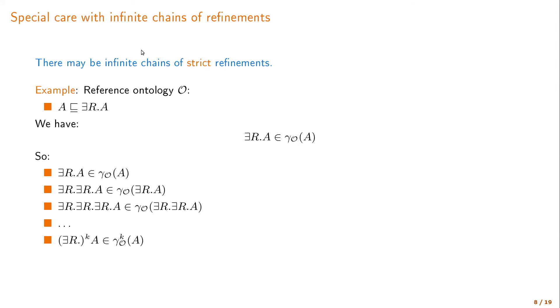And there is a possible concern here because there can be infinite chains of refinements. For example, if our ontology has an axiom which says that A is subsumed by exists R A, this means that we can generalize the concept A into the concept exists R A. So we could have an infinite chain of this type. Exists R A is generalized to exists R exists R A, which is generalized to exists R exists R exists R A and so on and so on.